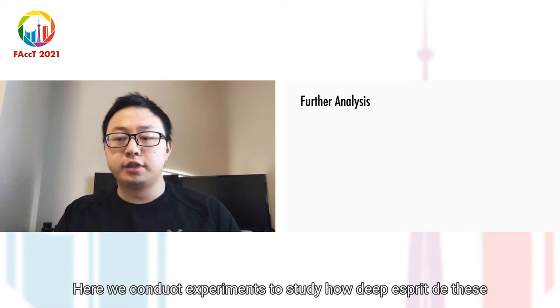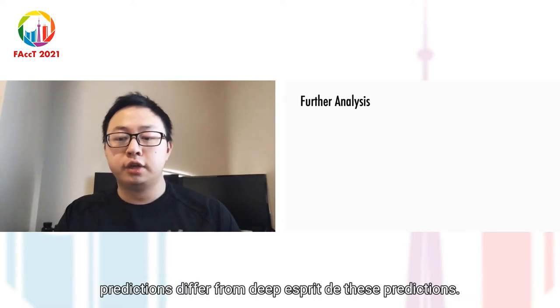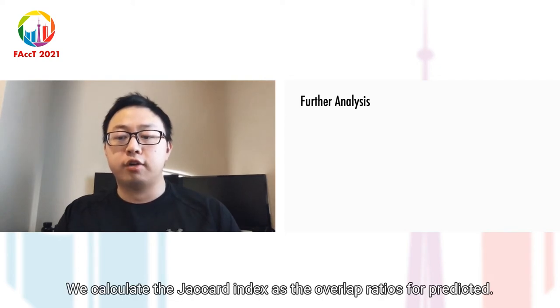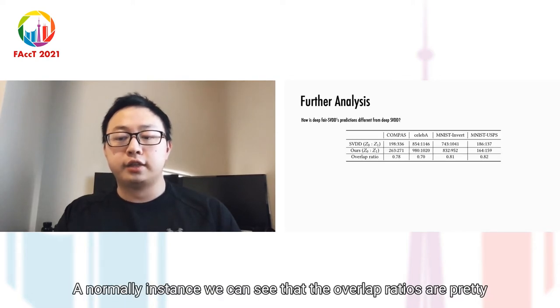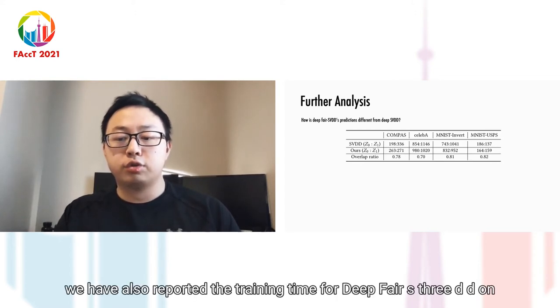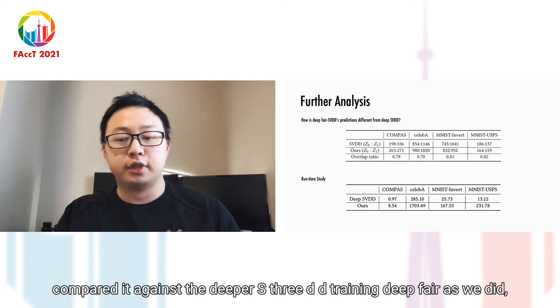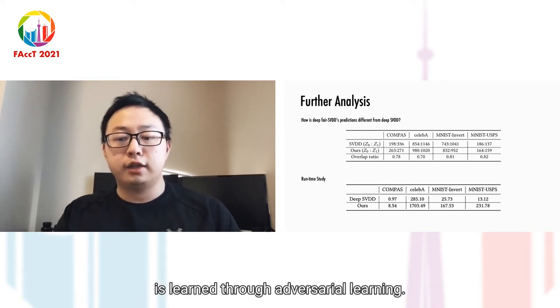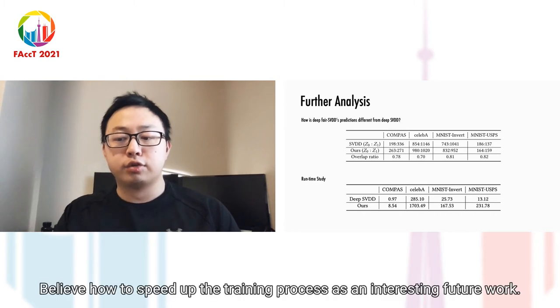Here we conduct experiments to study how DeepFair SVDD's predictions differ from DeepSVDD's predictions. We calculate the Jaccard index as the overlap ratios for predicted anomaly instances. We can see that the overlap ratios are pretty high among all datasets. We have also reported the training time for DeepFair SVDD and compared it against DeepSVDD. Training DeepFair SVDD takes longer time because we have a new fairness objective learned through adversarial learning. We leave how to speed up the training process as interesting future work.